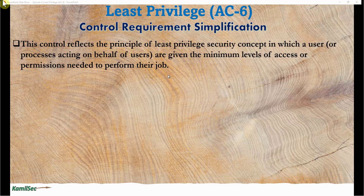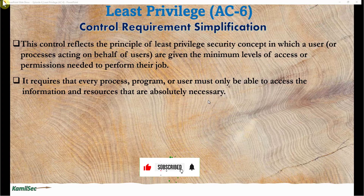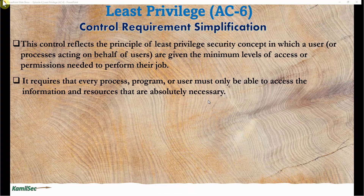It requires that every process, program, or user must only be able to access the information and resources that are absolutely necessary. Within an organization, users need access only to the type of information relevant to their role. If you don't have a security clearance, you cannot be exposed to certain classifications of documents — you need to know the type of information and resources that you are privy to.